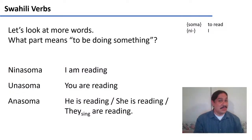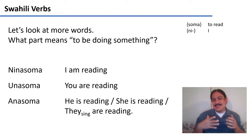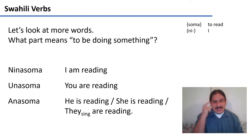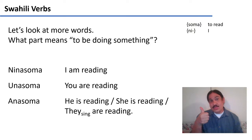Let's look at another example with more words. Let's say we get ni na soma, una soma, and ana soma — meaning I am reading, you are reading, and he is reading / she is reading / singular they are reading. What matters is that this is the third person: he, she, singular they. The elements on the left all have something in common, and on the right they're all about am reading, are reading, is reading. Try to figure out what element of the Swahili words corresponds to the doing-something element on the English words. Please pause the video.